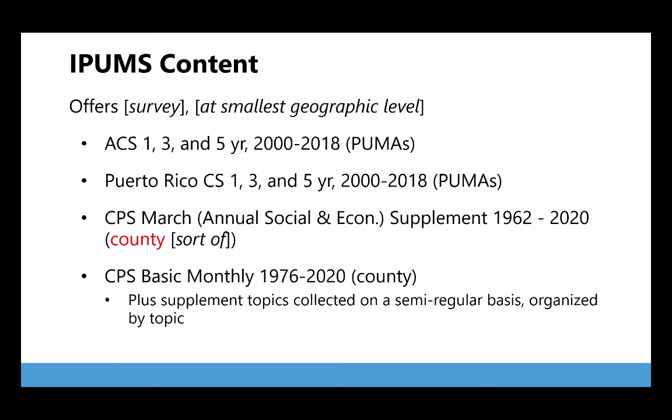IPUMS - and the folks at the Minnesota Population Center say it's pronounced with a short I - has a lot more data. For the ACS, they're not just going back to the start of the official ACS data in 2005; they're including all of the test data back to 2000, and they include the three-year data, which were available from 2007 up until 2013. CPS goes back to 1962, so there's a lot more data here.